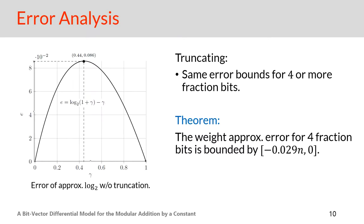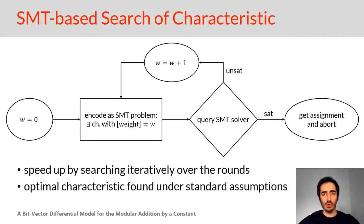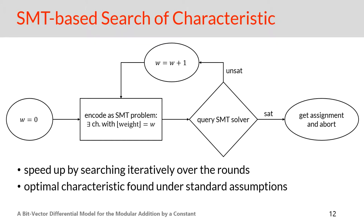That was all for the first part of this presentation. Adriana Ranea will present the second part. Apart from the differential model described before, we also show in this paper a method to use SMT solvers to search for characteristics of ciphers including constant addition. An SMT solver can solve decision problems — yes or no questions — but we want to solve a search problem: we want to search for a characteristic with the highest probability, equivalently with the lowest weight. So we need to translate this search problem into a sequence of decision problems.